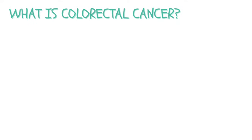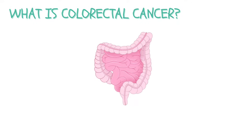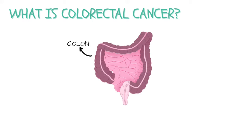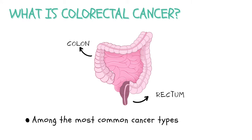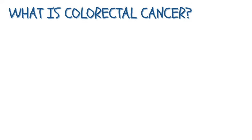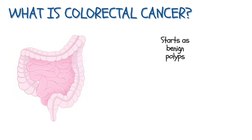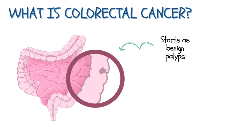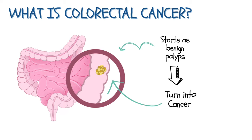Colorectal cancer, also known as bowel cancer, is a type of cancer affecting the colon or rectum. It's among the most common cancer types globally. Bowel cancer typically starts as small, benign growths called polyps, which, if left untreated, can develop into cancer over time. This process usually takes around 10 to 15 years.